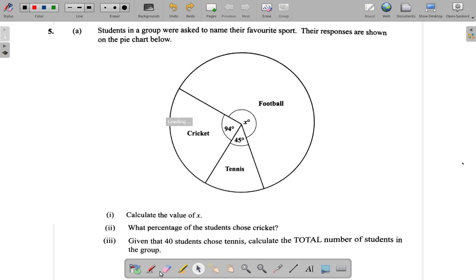So here now, the angle representing tennis is 45 degrees. So the proportion of students who play tennis is 45 over 360. That's the fraction of students who play tennis.